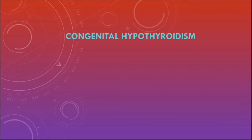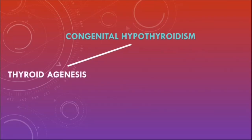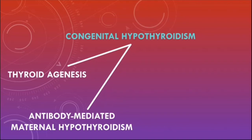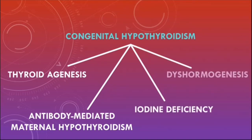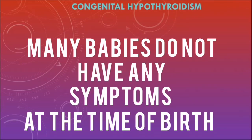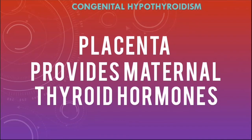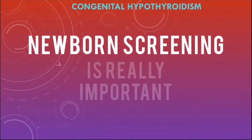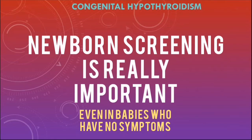Congenital hypothyroidism is where babies are born with severe hypothyroidism, and there are many causes. These include thyroid agenesis, where the thyroid gland does not form at all, and antibody-mediated maternal hypothyroidism where maternal antibodies attack the baby's thyroid. Other causes include iodine deficiency and dyshormonogenesis, where the thyroid gland lacks enzymes such as thyroid peroxidase to make thyroid hormones. Babies are screened at birth, as many show no symptoms because the placenta provides maternal thyroid hormones to the fetus.